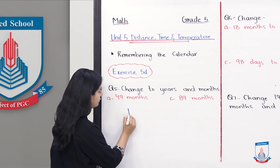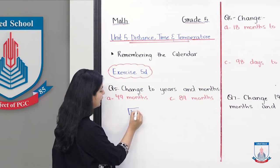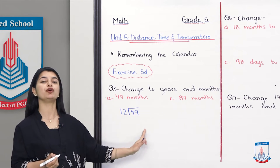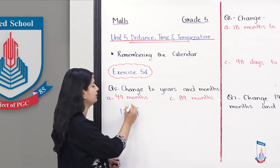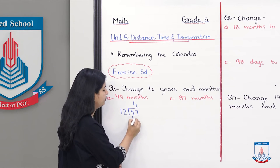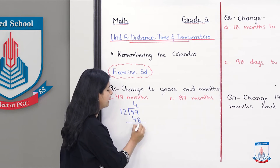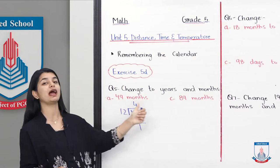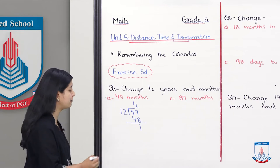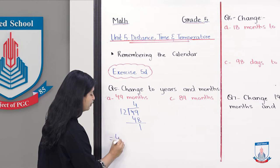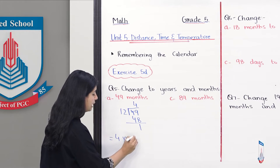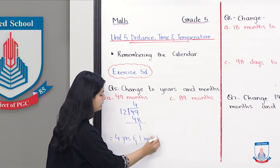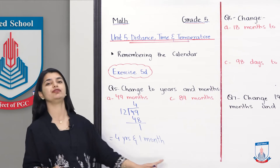Let's solve this: 49 divided by 12. If you recall the 12 times table, 12 times 4 is 48, and the remainder is 1 month. So how can we write 49 months? We can write it as 4 years and 1 month. This is your answer for the first part.